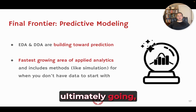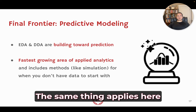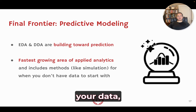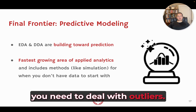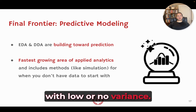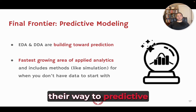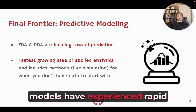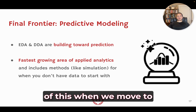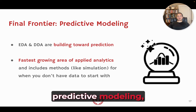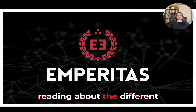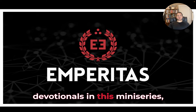All of this is setting the stage for where we're ultimately going: predictive modeling. Like in our qual and quant data devotional where I said 80% of the work is the qualitative stuff everybody skips, the same applies here. EDA and DDA are 80% of the work you should be doing when building predictive models. You need to understand your data, missing data, and outliers. DDA introduces a new problem: dealing with low or no variance. We'll also go to the fringe with simulation modeling — what you do when you want to understand the future but don't have historical data. Keep your descriptive data analysis progress going, and I'll see you at the next one.